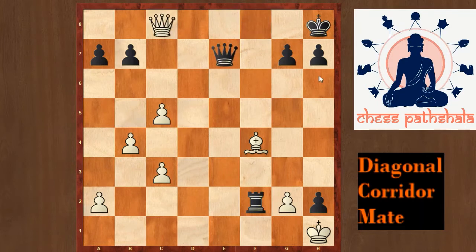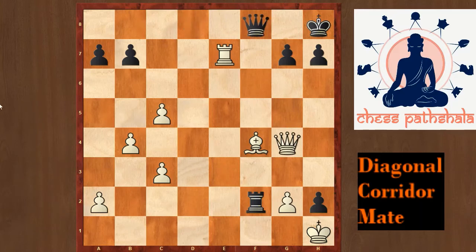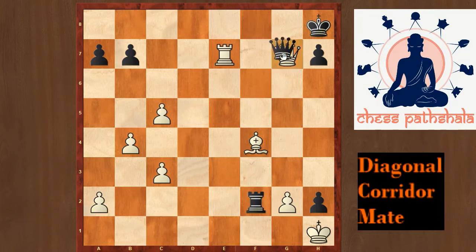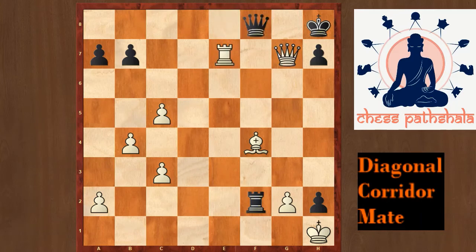In the game, after rook takes e7 black tried to move queen to f8, and now once again we have the diagonal corridor mate. White played the spectacular queen takes g7 check, and after queen takes g7 we can see that rook e8 check finishes off black. Hence black resigned after queen takes g7.